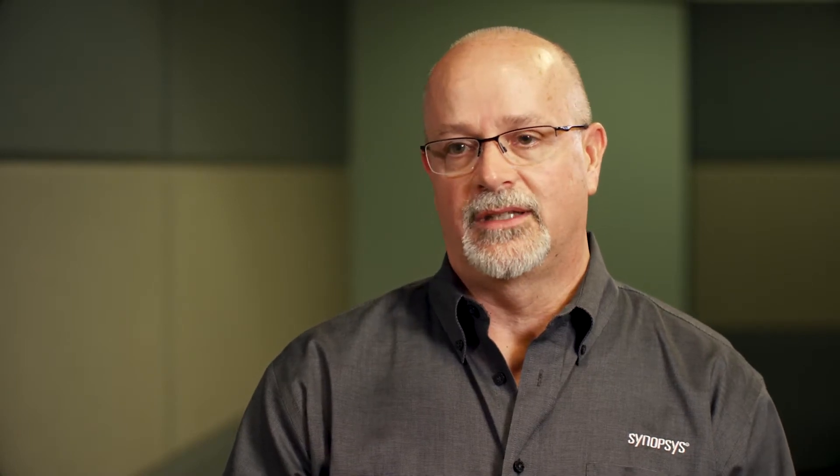So you have everything from L0, which is on and standard operation, then L0s, L1, L2, and L3 — and L3 is off. What we've done in the protocol is defined what you can turn off at various intermediate states. What we found was that going all the way off for a cell phone is impractical — nobody wants to wait a long time for it to power up from L3, because you've turned off everything: the PLLs and other aspects of the electrical interface on the PHY side have to get powered up, and it just takes too long.